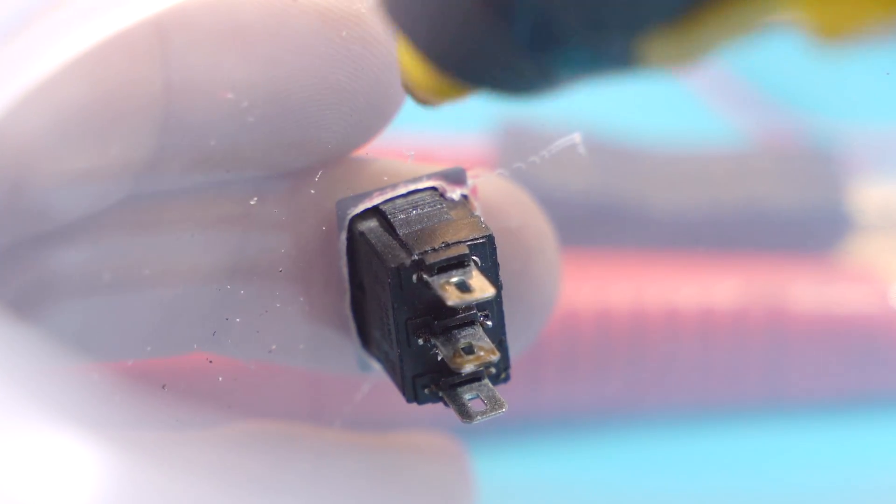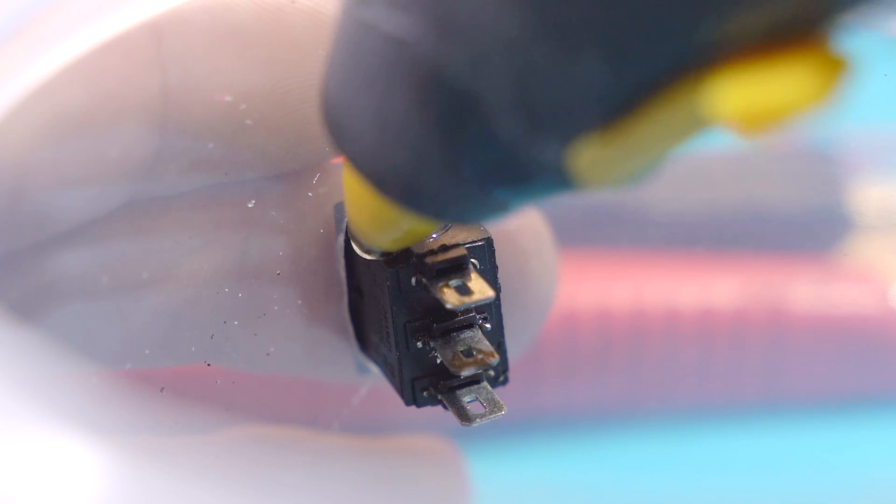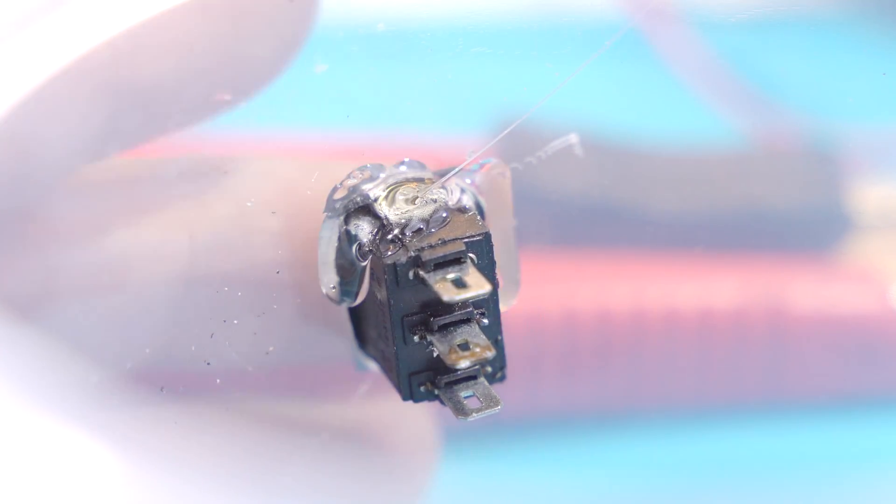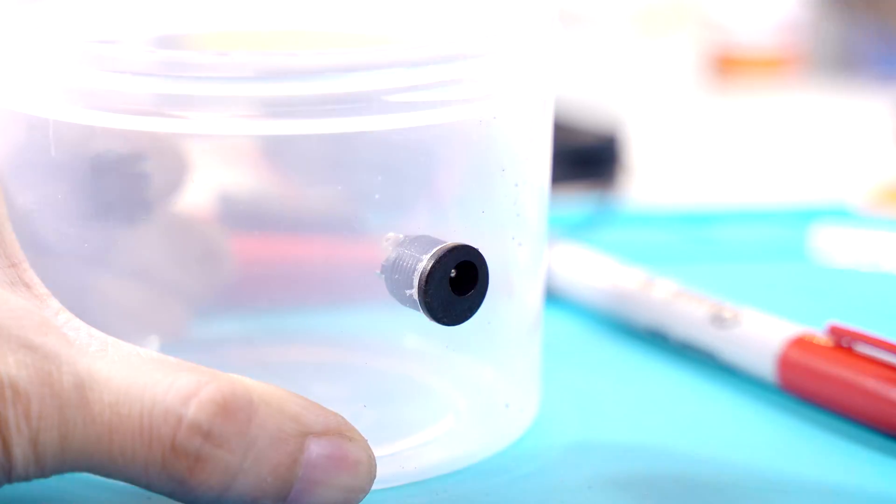To prevent your switch from wobbling around, you can use a few blobs of hot glue to secure it in place. Then you can cut another hole for your DC jack.